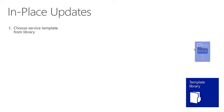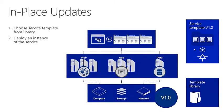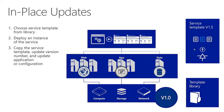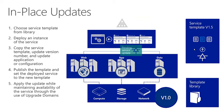Let's take a look at how in-place updates work. You choose a service template from the library, then deploy an instance of this service. Then it copies the service template, updates the version number, and updates the application or configuration. Then you publish the template and set the deployed service to the new template. Finally, apply the update while maintaining availability of this service through the use of upgrade domains.